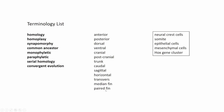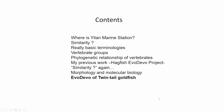The neural crest cell is okay. Somite, epithelial, mesenchyma, the cells, the Hox gene cluster — you already checked. And then this is the final part, the abodebo of twin-tail goldfish. And I still have 30 or 40 minutes, so it's okay.